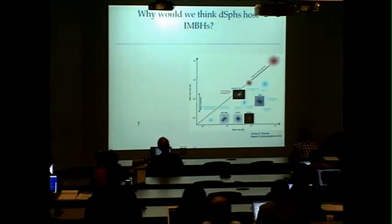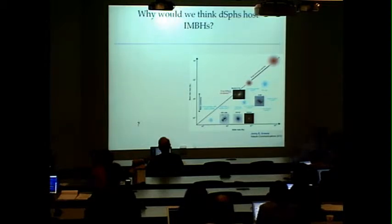So why would we think dwarf spheroidal galaxies host intermediate massive black holes? Well, we have a lot of evidence of massive black holes at very different scales being hosted by galaxies of all different kinds with big bulges, bulgeless galaxies, dwarf galaxies, all of them from a range from 10^6 to 10^11 solar masses.